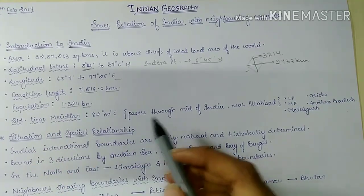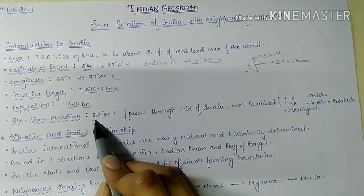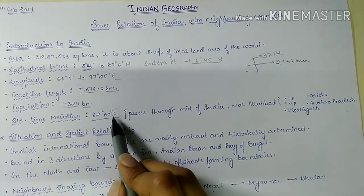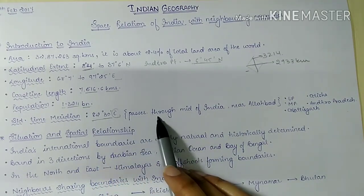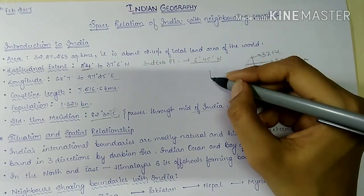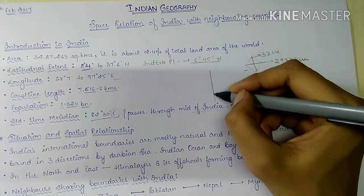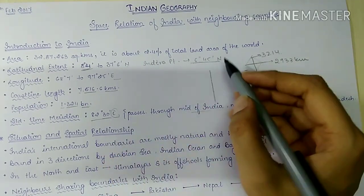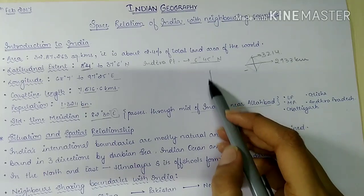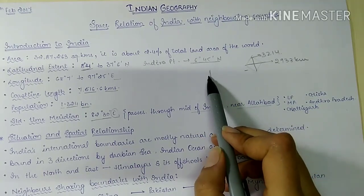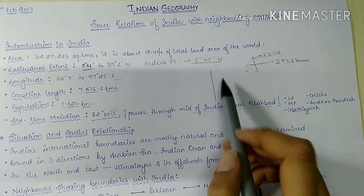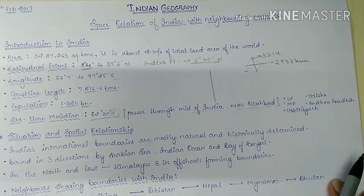The population of this big country is 1.324 billion. The standard time meridian is 82 degrees 30 minutes east — 82 and a half degrees east. It passes through the middle of India near Allahabad. The states through which this line crosses are Uttar Pradesh, Madhya Pradesh, Chhattisgarh, Odisha, and Andhra Pradesh.